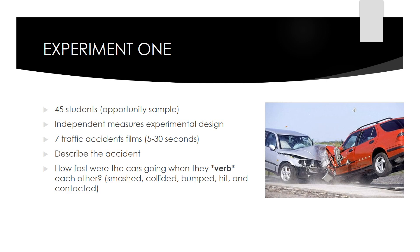After watching the film, participants were asked to describe what had happened as if they were eyewitnesses. They were then asked about the speed of the vehicles during the traffic accident. The question was posed using five different verbs that had different levels of intensity: smashed, collided, bumped, hit, or contacted. Each group was presented with the question using one of these verbs.